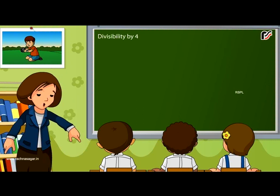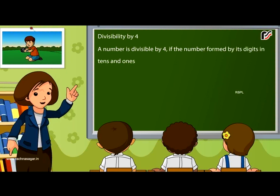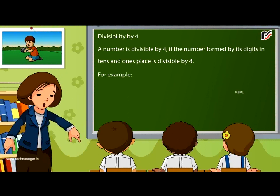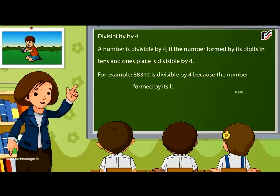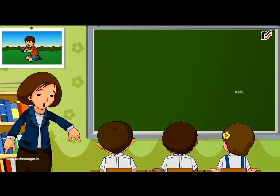Divisibility by 4: A number is divisible by 4 if the number formed by its digits in the 10's and 1's place is divisible by 4. For example, 88312 is divisible by 4 because the number formed by its last two digits, that is 12, is divisible by 4.